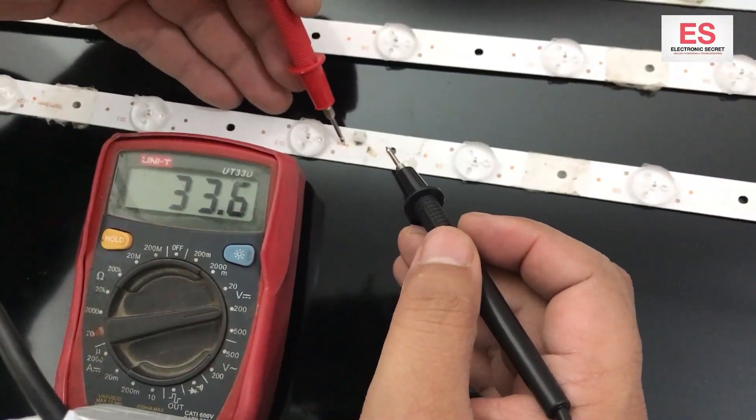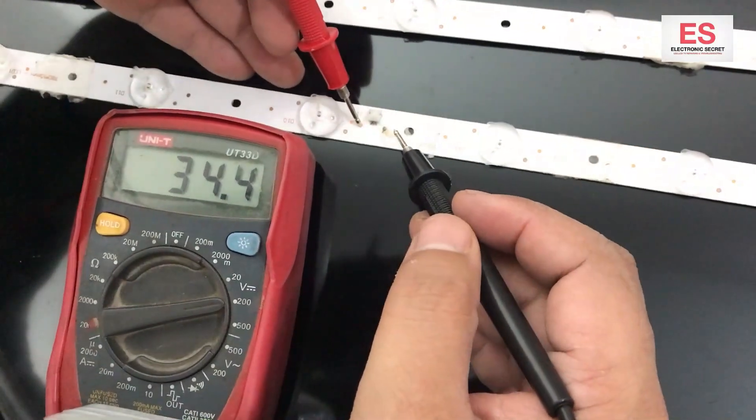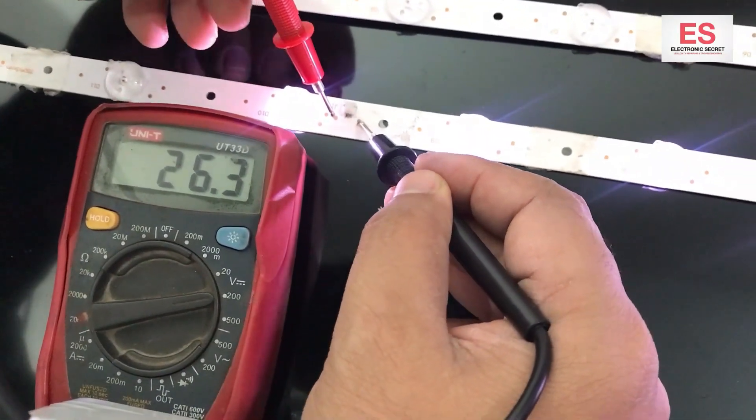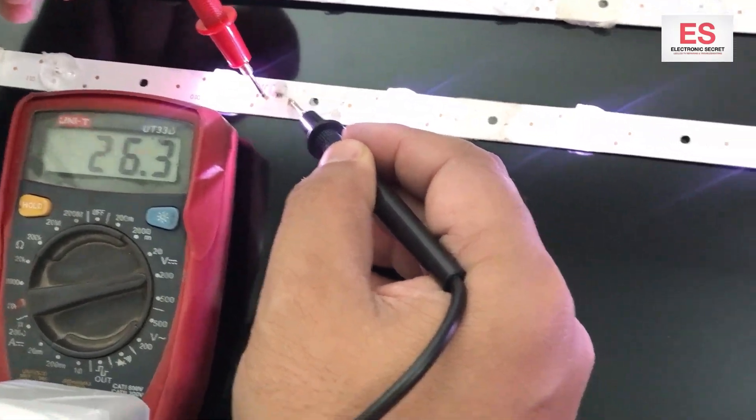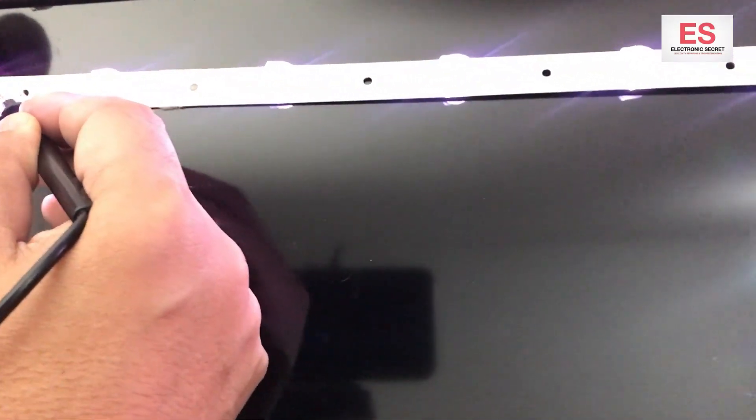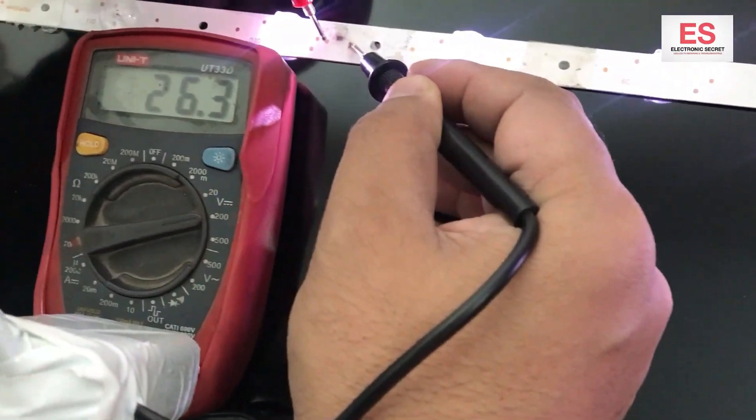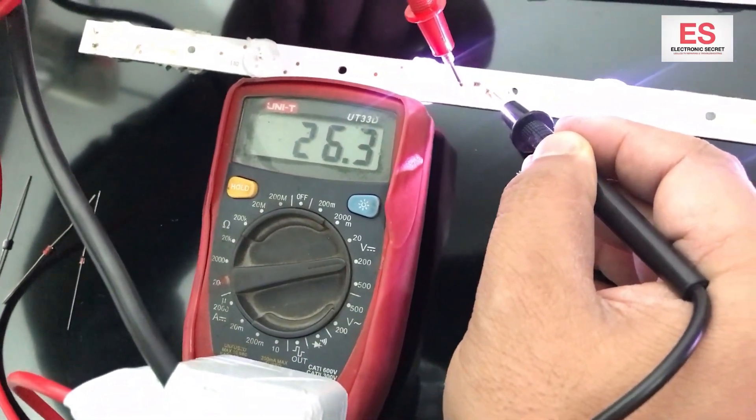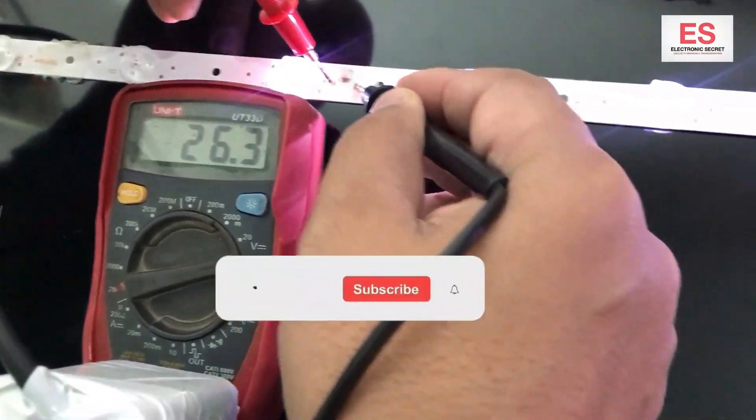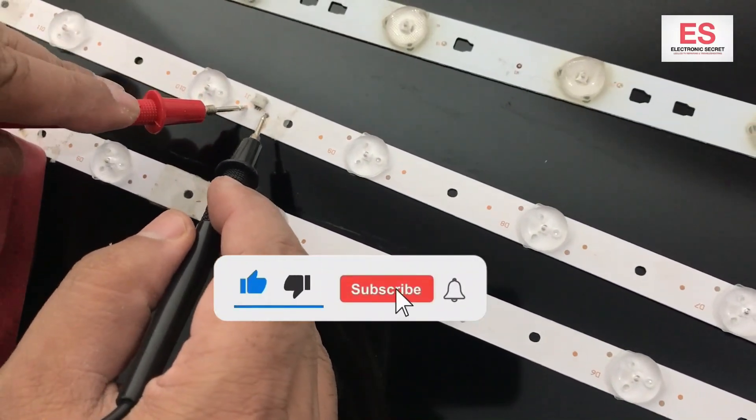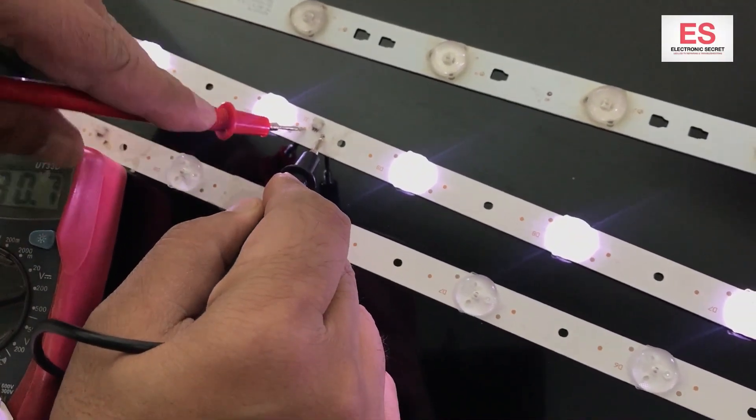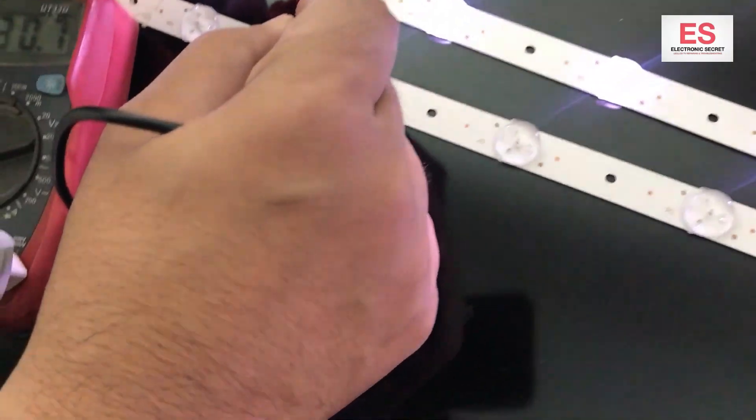Now I am checking the backlight strip of a TV. You can see that two lights are not glowing and all others are glowing, and it is also showing the voltage on the meter. So this backlight is faulty because its two lights are not glowing.